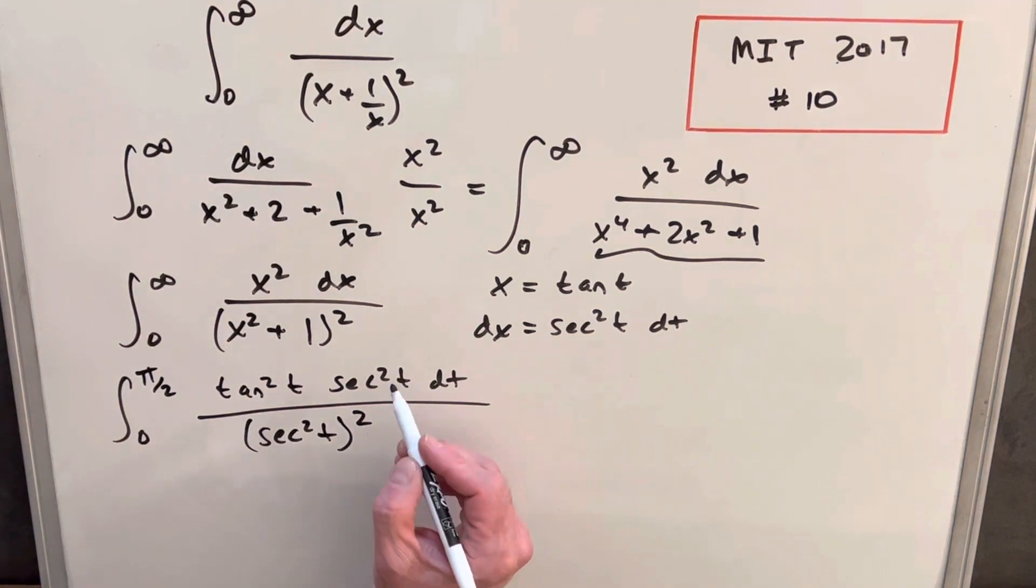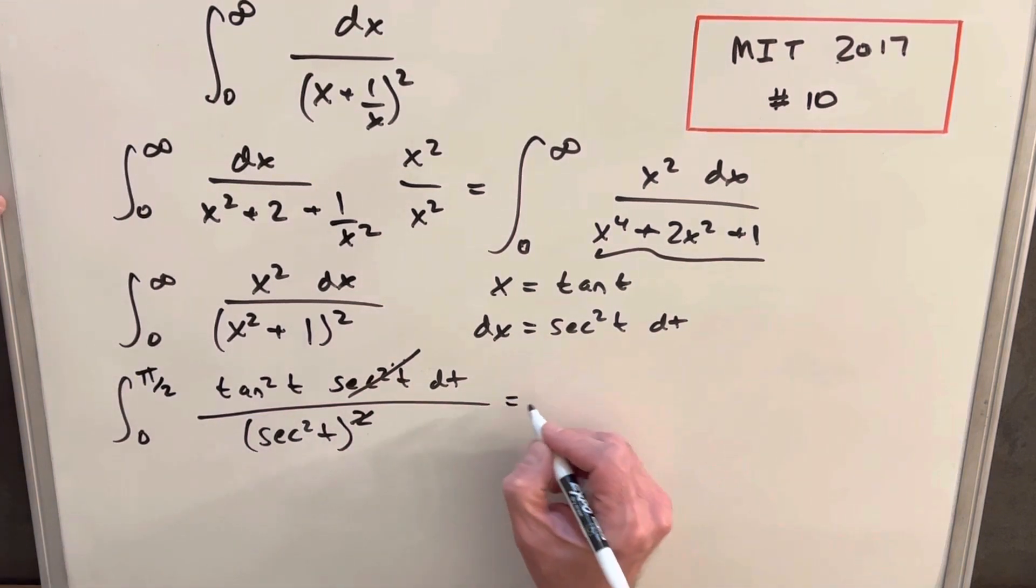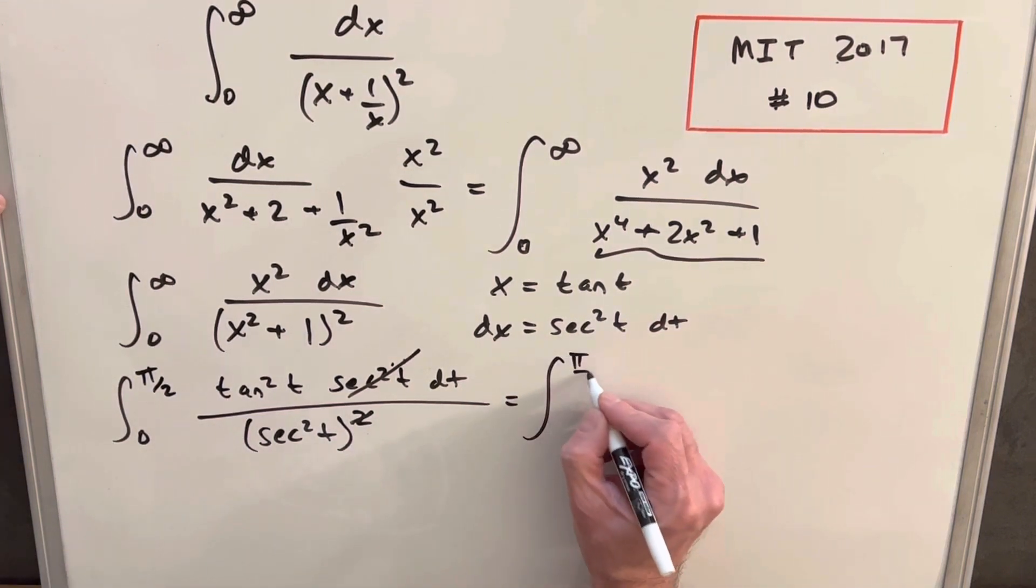But we're going to have some nice cancellation because we have two of these things here. So we have essentially secant to the fourth. So if we cancel here, we can cancel here and just have secant squared in the denominator. But having secant squared in the denominator is the same thing as having cosine squared in the numerator. So let's rewrite again.